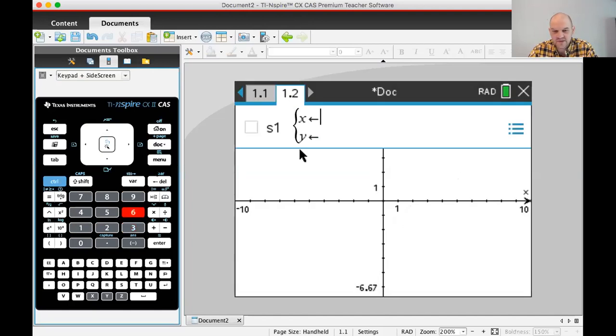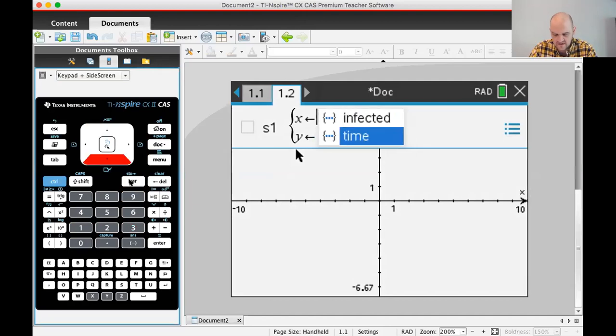Now I need to get those lists. If I press the var key, they're just there. The x-coordinate is going to be the time, and the y-coordinate is going to be the number of people infected. So we'll press Enter.